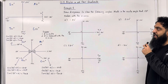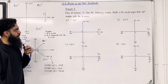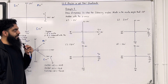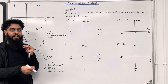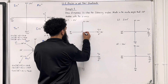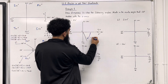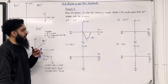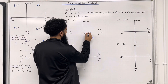I'll be implementing these key facts within examples. Example 1: draw diagrams to show the following angles, marking the acute angle that OP makes with the x-axis. Part A: minus 80 degrees — a negative angle, so we go clockwise from the positive x-axis. Minus 80 degrees looks like this. The acute angle with the x-axis is the positive value: 80 degrees. That is the line O to P.